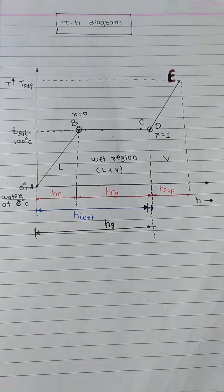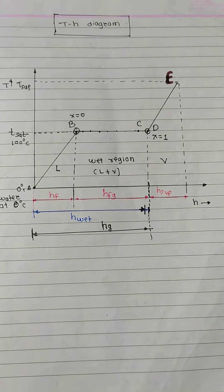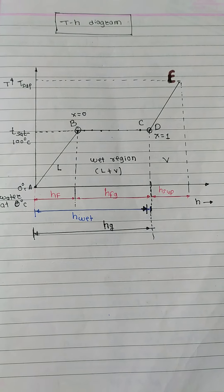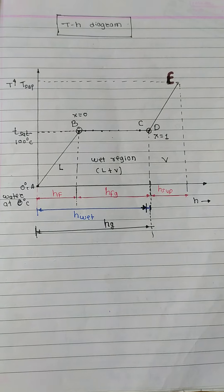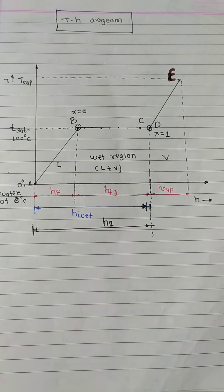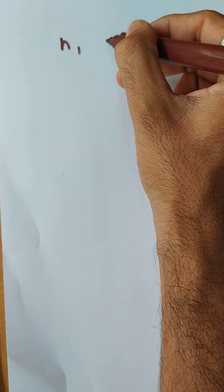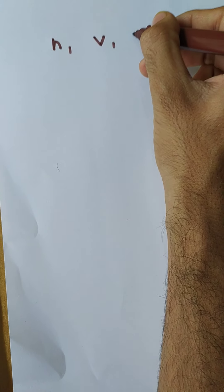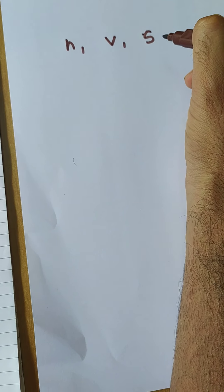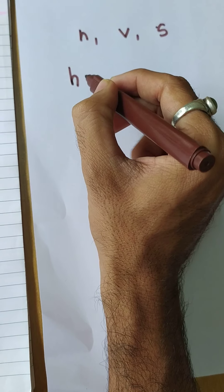In this video, we are going to cover how to calculate the properties of water. In today's lecture, we are going to discuss three properties: first is enthalpy, second is volume, and the third is entropy. Today we will calculate the property of enthalpy.